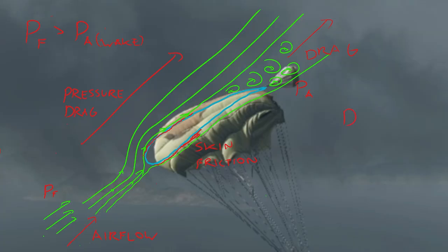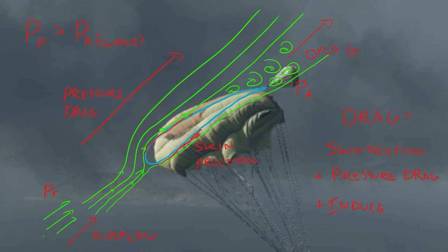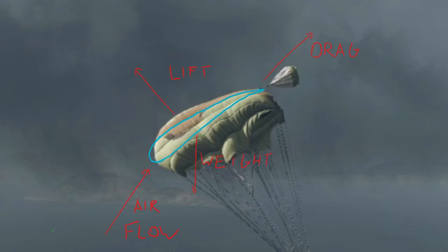Going back to the side view, drag — acting back and parallel to the airflow — is made up of three components: skin friction drag, which is friction between the air and the parachute; pressure drag, also called wake drag, which is the pressure differential between the air in front and the air behind the parachute; and induced drag, which is air escaping around the sides — an inefficiency in lift that is completely a function of lift. To summarize: the forces acting on the parachute are lift, drag, and weight. Lift and drag together counteract weight, which is why a parachute slows your descent.